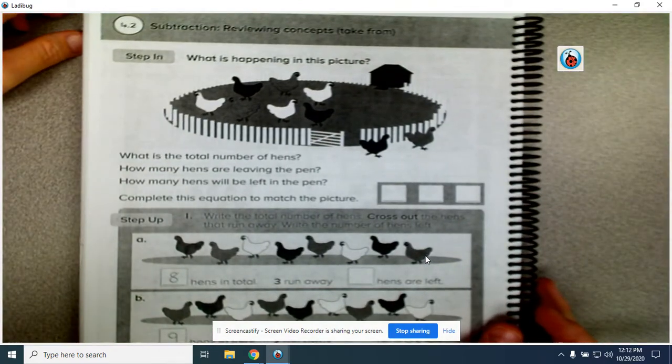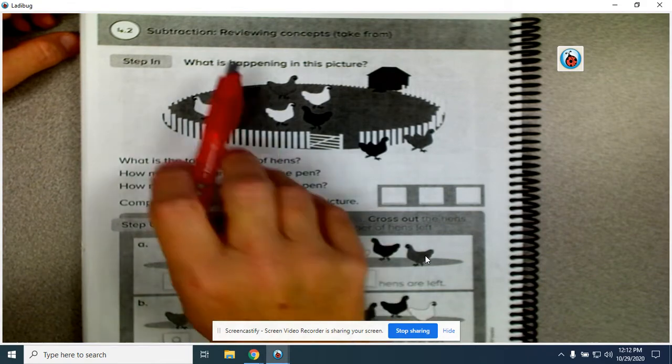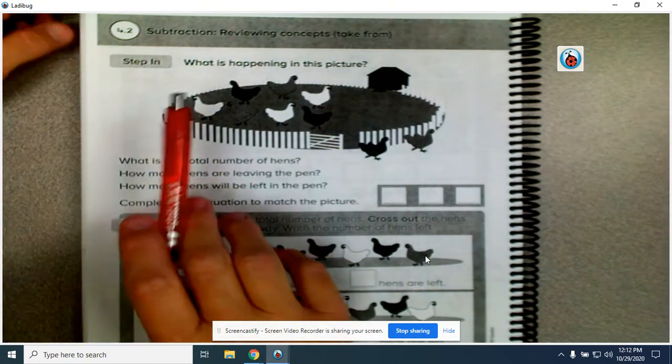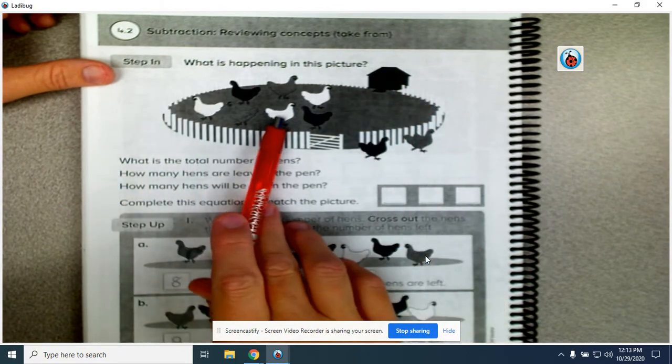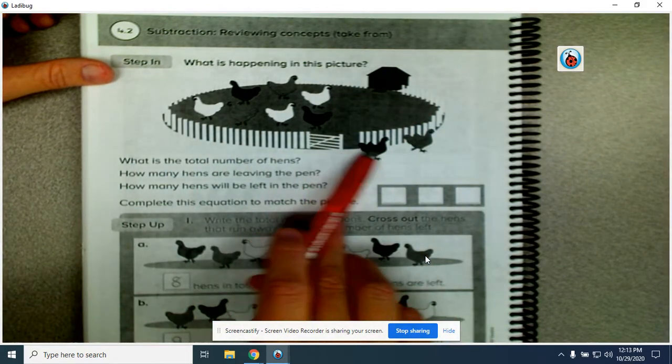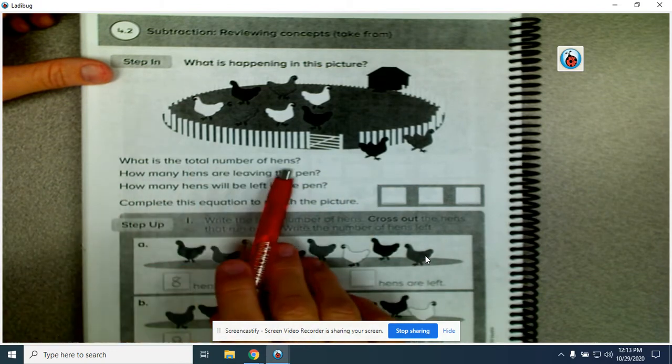Okay, so we're working on subtraction today for our activity. It says on the step in, what is happening in this picture? So I'm looking and there are some hens in the fence and then there are some hens that look like they're walking away from the others.